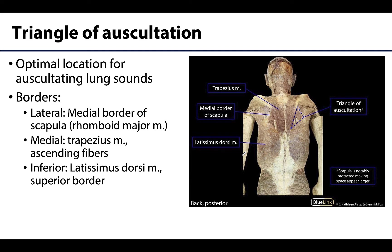One important clinical correlation that both of these muscles share is that they are boundaries of the triangle of auscultation, located laterally at the medial border of the scapula. Sometimes the lateral border is described as the rhomboid major muscle. Medially, the border will be the trapezius, specifically those ascending fibers, and inferiorly the superior border of the latissimus dorsi muscle. All three of these structures are palpable, and when you connect those dots, you get this triangle of auscultation.